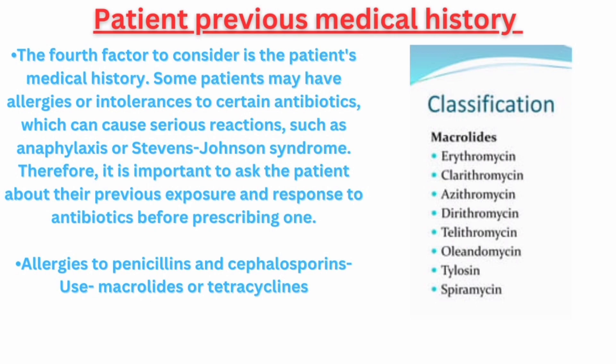The fourth factor to consider is the patient's medical history. Some patients may have allergies or intolerances to certain antibiotics, which can cause serious reactions such as anaphylaxis or Stevens-Johnson syndrome. Therefore, it is important to ask the patient about their previous exposure and response to antibiotics before prescribing one. For example, if a patient is allergic to penicillin, they may also be allergic to other antibiotics that have a similar structure, such as cephalosporins or carbapenems. In this case, alternative antibiotics such as macrolides or tetracyclines may be used instead.